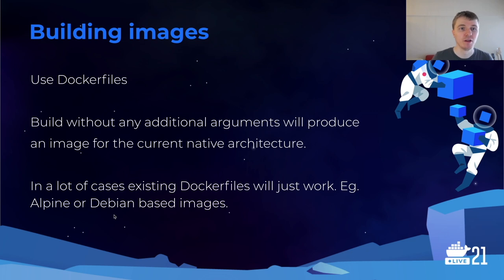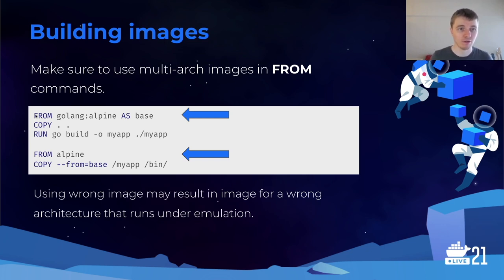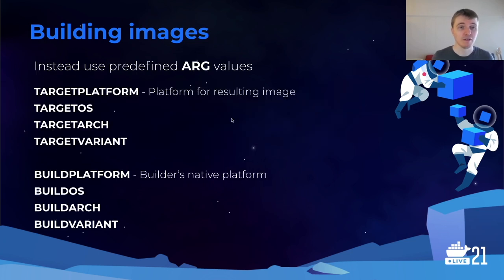Now let's talk about building images. Mostly everything will just work out of the box if you use Dockerfiles, but there are some things to look out for. As I mentioned, you should use multi-platform images for any container — the same is true for building. Make sure that in your Dockerfile, FROM commands point to multi-platform images. Also avoid having a hardcoded architecture constant in your Dockerfile, as that obviously would not work on any architecture other than AMD64.